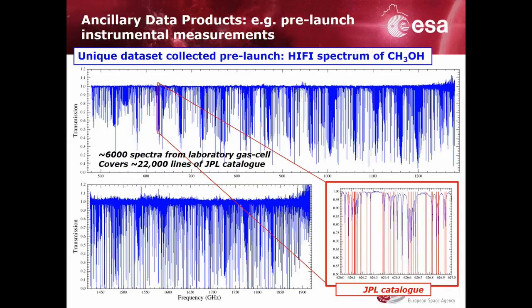Another example of the various available ADPs are the gas cell data products, which are part of the pre-launch instrumental measurements. They emulate the data structure used in standard science products acquired over the Herschel mission for Hi-Fi, and therefore they can be used and treated in a similar manner.